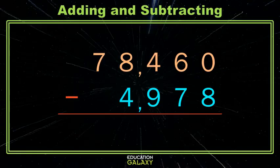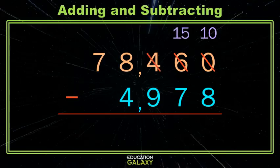Well we're gonna have to do a little borrowing or regrouping work. So let's start by taking one ten away from the tens place. So that's six, let's chop it, give that ten to the neighbor, so where I had a zero I'll now have ten over there. And since I took one ten away from my six tens I'm left with five tens. Okay now we can't take that seven away from the five so let's look at our hundreds place. We're gonna have to take one of those hundreds away from the four and we're gonna give that to the neighbor so my five over there became fifteen. Now since I took one hundred away from my four hundreds I'm just left with three hundreds.